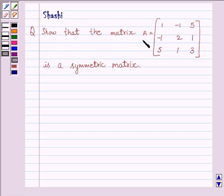Question is, show that the matrix A is equal to 1, -1, 5, -1, 2, 1, 5, 1, 3 is a symmetric matrix.